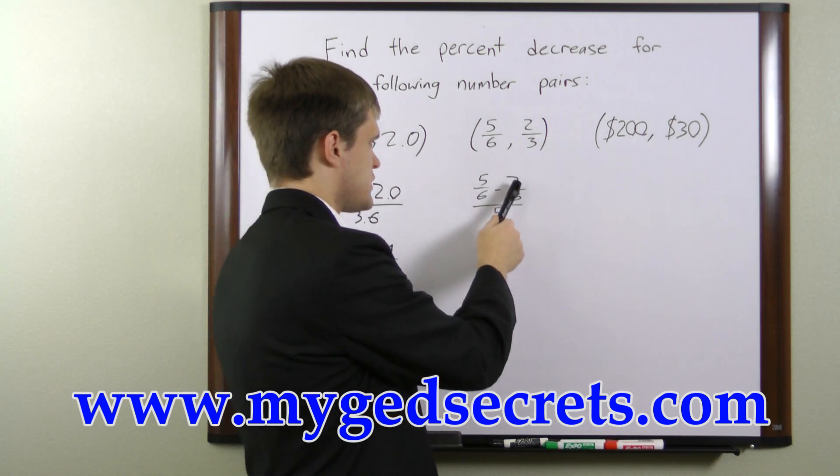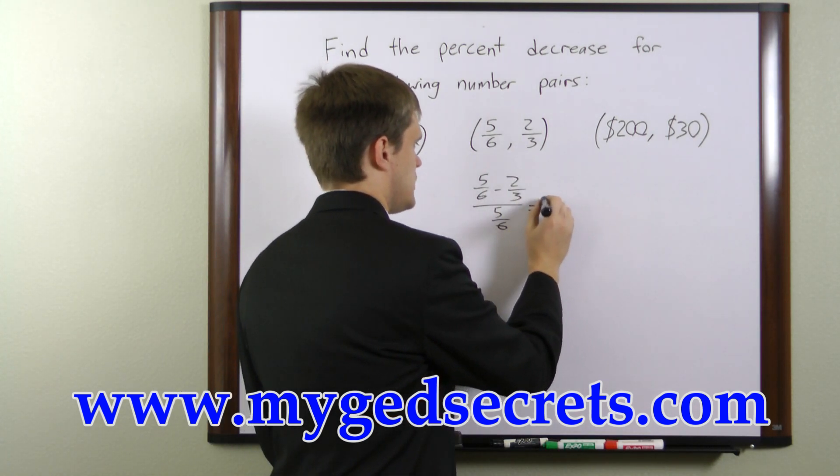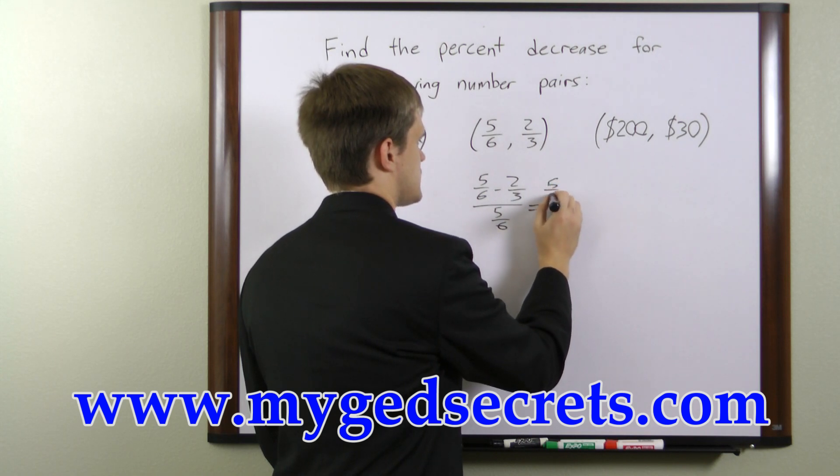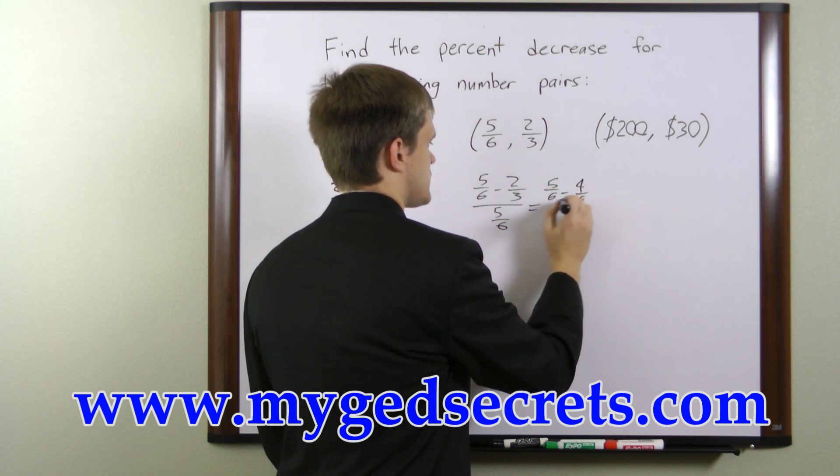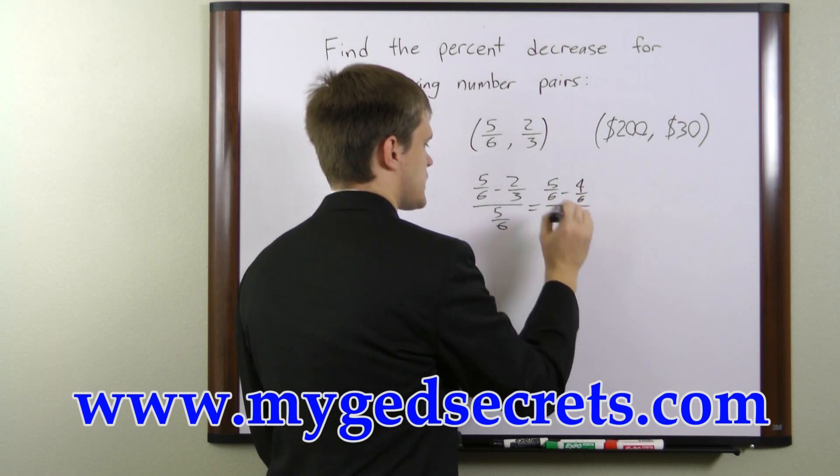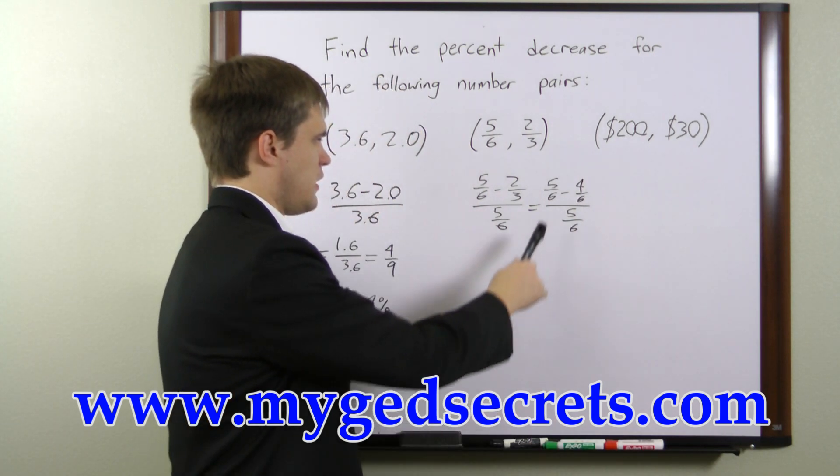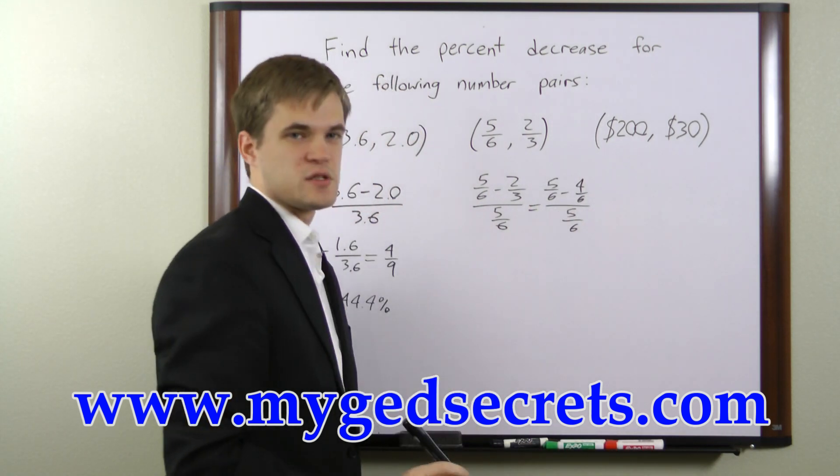So we'll multiply this by 2 over 2, and what we wind up with is 5 over 6 minus 4 over 6 divided by 5 over 6. Now 5 over 6 minus 4 over 6 is just 1 over 6.